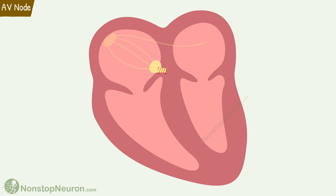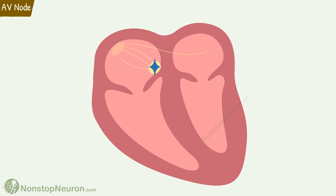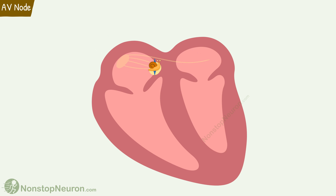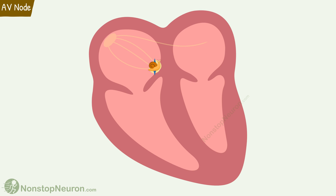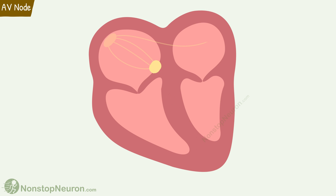The delay in impulse conduction at the AV node allows time for the atria to empty their blood into the ventricles. From the SA node, the impulse spreads rapidly to all the muscles of both the atria and the AV node. Due to the incoming impulse, atrial muscles start contracting. However, the conduction of impulse through the AV node is so slow that the impulse does not reach the ventricles until the atria have contracted. Only after the completion of atrial contraction does the impulse reach the ventricles to trigger ventricular contraction. Without this delay, the atria and ventricles would contract simultaneously and pumping would not be as efficient.